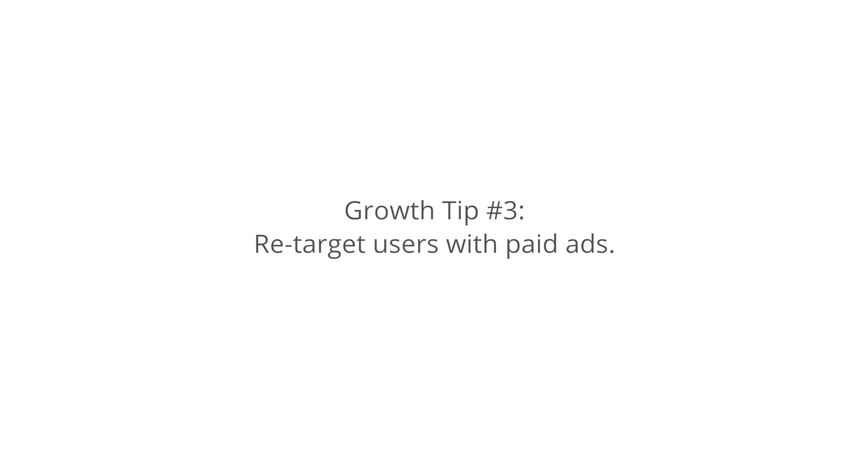Number three: retarget users with paid ads. It's important to re-engage with past users to keep them coming back. To help you do this, Google AdWords allows you to add retargeting tags to your app. These small snippets of code will allow you to target your users with remarketing ads based on their behavior within your app. For example, you can create a remarketing list of users who have gotten to the third level of your game. That way, you can retarget those users with a very specific and delightful ad.